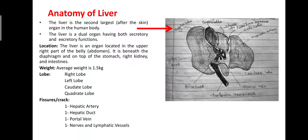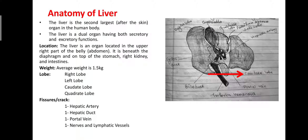This is the right lobe and left lobe. The caudate lobe is located on the lower aspect of the visceral surface. It lies between the gallbladder fossa and the fossa produced by the ligamentum teres. The quadrate lobe is located on the upper aspect of the visceral surface. It lies between the inferior vena cava and the fossa produced by the ligamentum venosum.